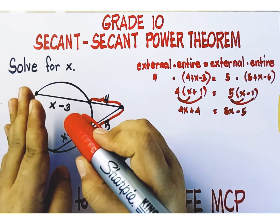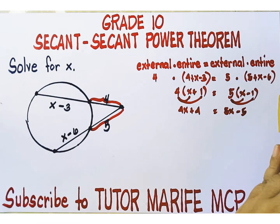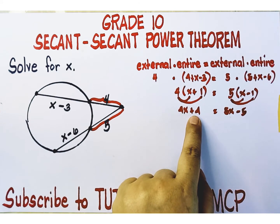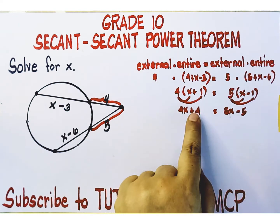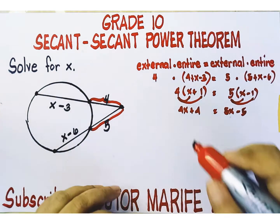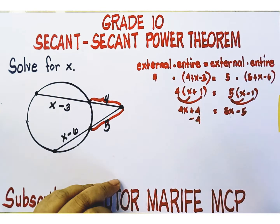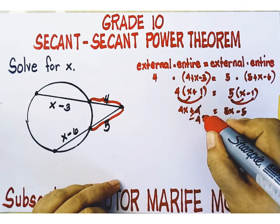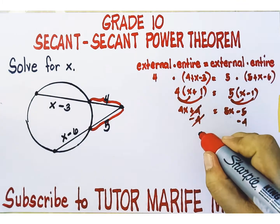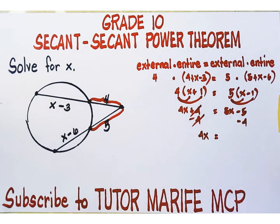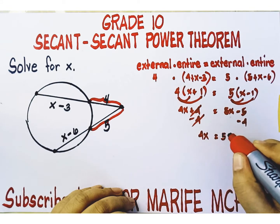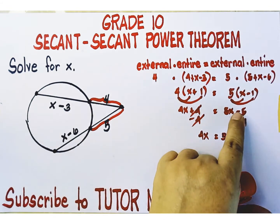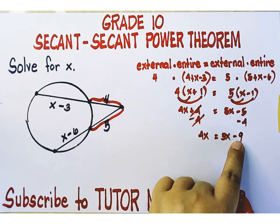Collect x terms on the left side of the equation and constant terms on the right side. Eliminate the constant term on the left side using the subtraction property of equality — subtract four from both sides. The left side becomes four x, and the right side becomes five x minus nine, since negative five minus four equals negative nine.